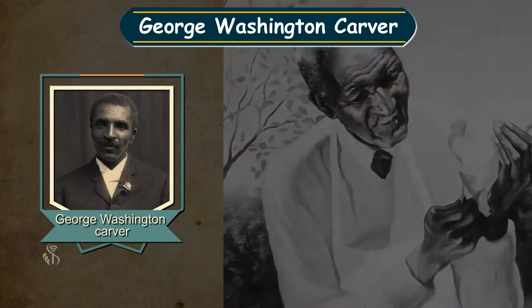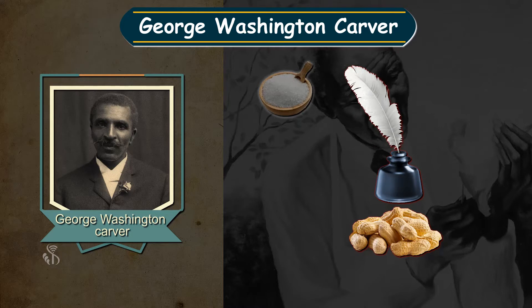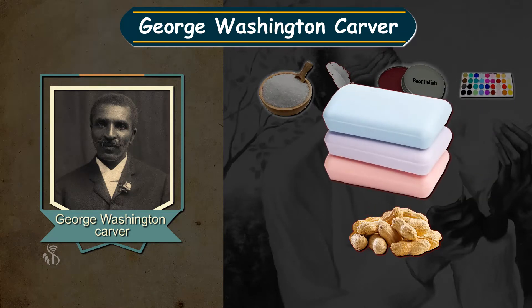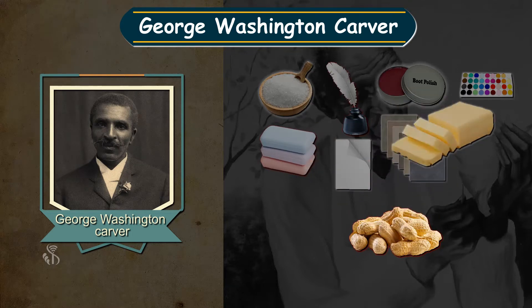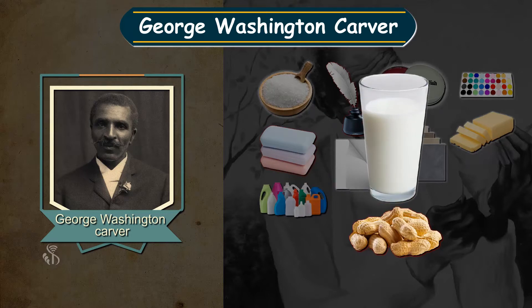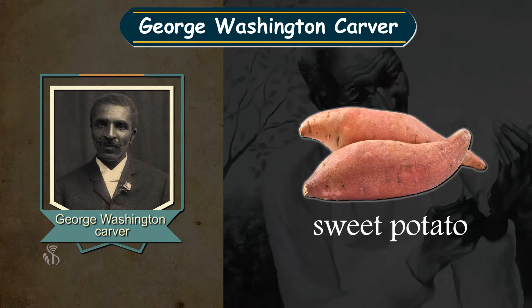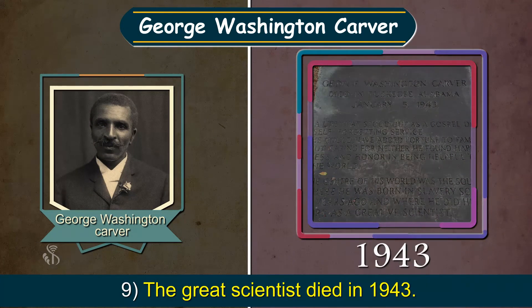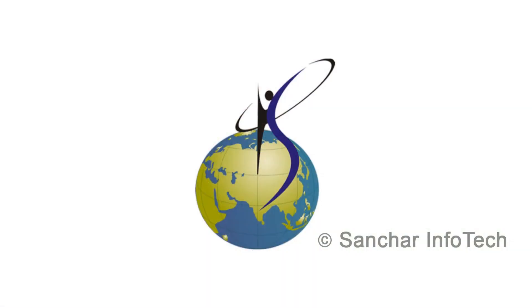Eight: Carver found many uses of peanuts — from peanuts he made sugar, ink, shoe polish, colors, soaps, paper, tiles, butter, plastic, milk, etc. — a total of 300 things. From sweet potatoes he made as many as 118 things. Nine: the great scientist died in 1943. Good students, you did a good job!